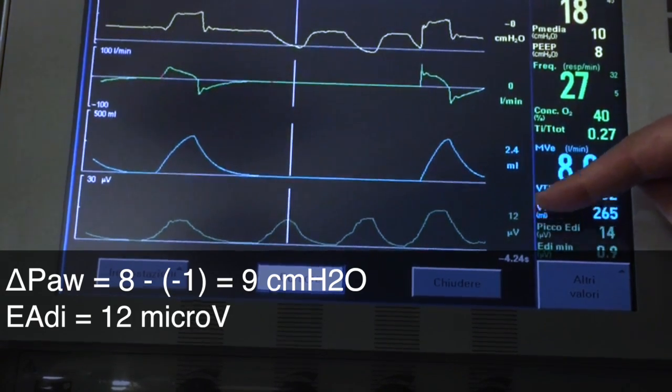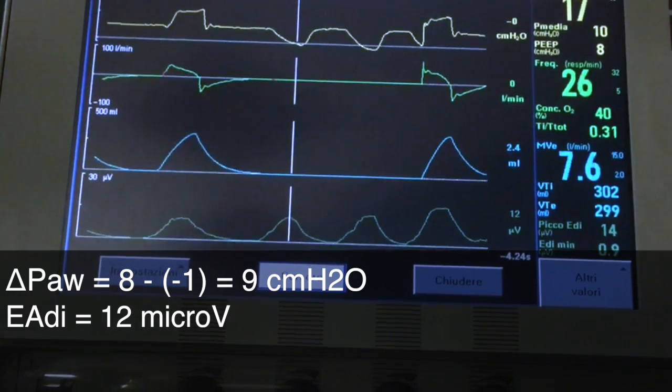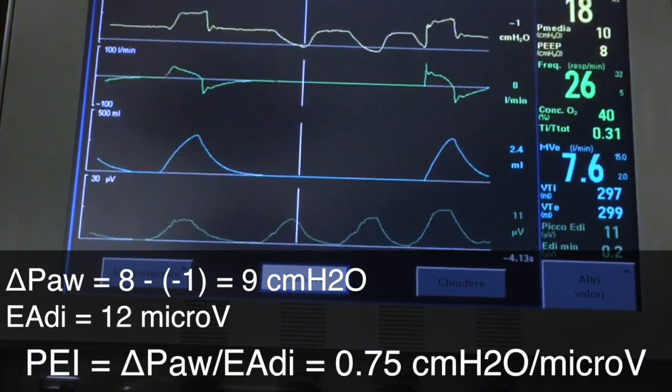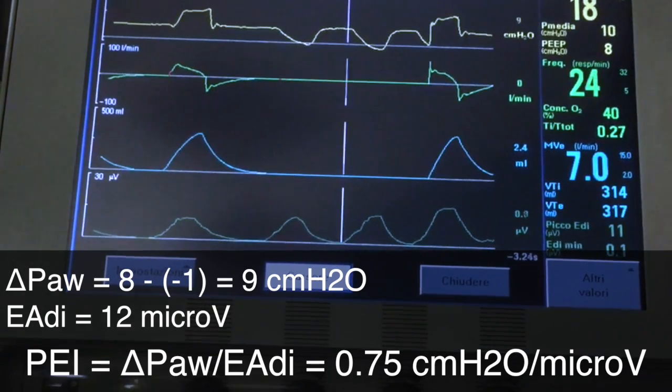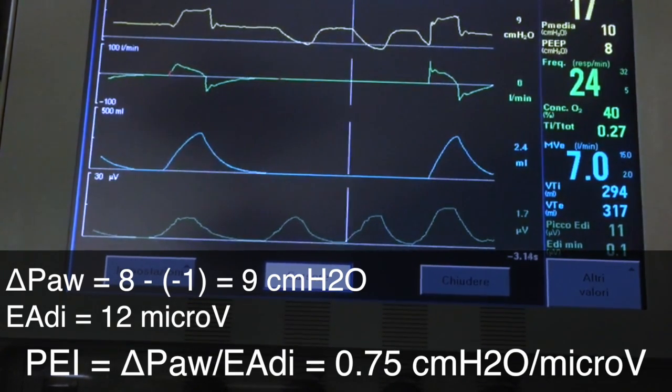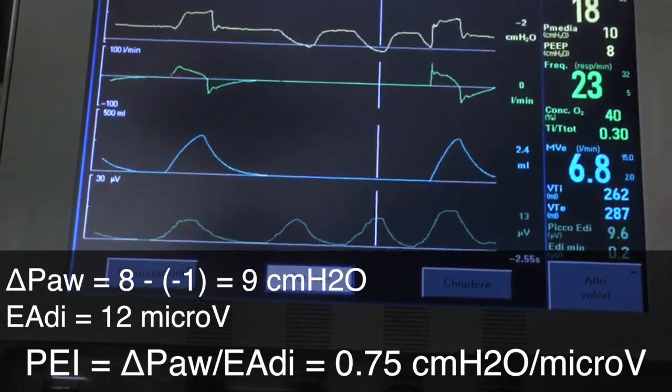PEI stands for PMUSC E-ADI index and relates the pressure generated by the respiratory muscles to the electrical activity of the diaphragm. In our case, it is 0.75 cm of water per microvolt.